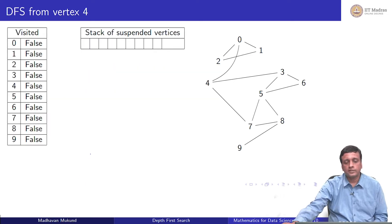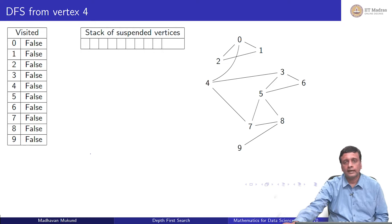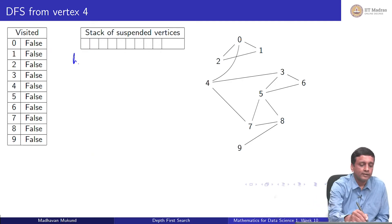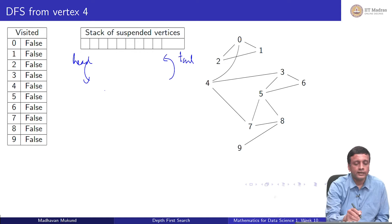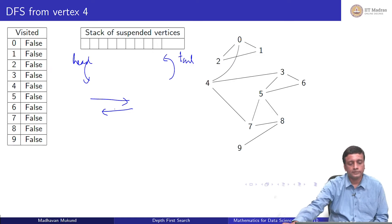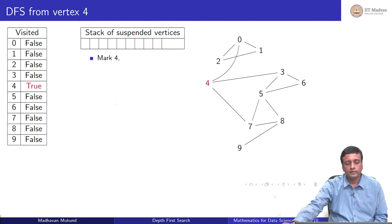Let us explore depth first search in detail. Our stack will grow from left to right, just like our queue did. When I add things to the stack I put it on the right, and unlike a queue, when I remove things from the stack I also remove from the right. For a change, instead of vertex 7, let us start our depth first search from vertex 4. We first mark 4 as visited, then pick a neighbor of 4, suspend 4, and start exploring that neighbor instead.